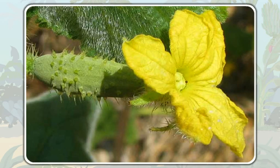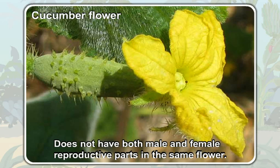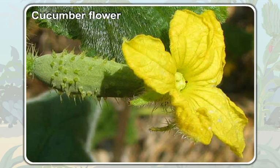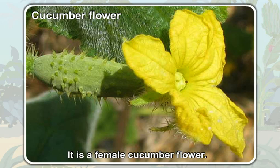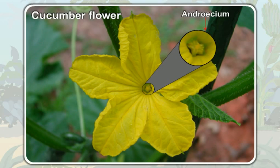All these flowers have male and female reproductive parts in the same flower. Now look at this flower — it is a cucumber flower. Unlike a mustard flower, a cucumber flower does not have both male and female reproductive parts in the same flower. This cucumber flower has only gynoecium, so it is a female cucumber flower. Another cucumber flower has only androecium, so it is a male cucumber flower.